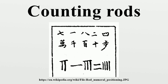Using counting rods, digits are represented by the number of rods, and the perpendicular rod represents 5. To avoid confusion, vertical and horizontal forms are alternately used. Generally, vertical rod numbers are used for the units, hundreds, ten thousands, etc., while horizontal rod numbers are used for the tens, thousands, hundred thousands, etc. Sun Tzu wrote that one is vertical, ten is horizontal. Red rods represent positive numbers and black rods represent negative numbers.